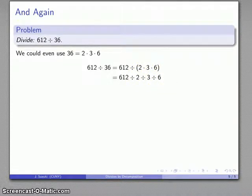And again, the advantage here is that I have replaced a complicated division by 36 with a bunch of little easy divisions. So 612 divided by 2, well that's something we should be able to do in our head, that's 306, and then 306 divided by 3, again something we could probably do in our head, that's 102.